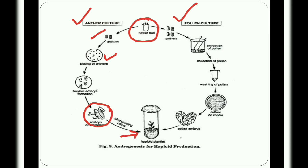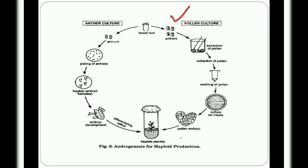In pollen culture, the excised anthers are homogenized and filtered through a nylon sieve to remove anther wall debris. The pollens are then centrifuged at 500 to 800 rpm for 5 minutes, the supernatant is discarded, and pollen pellets are suspended in fresh basal liquid medium. The mixed pollens with measured volume of liquid medium are spread on a sterile petri dish, sealed with paraffin, and incubated at 27 to 30 degrees Celsius under 500 lux. After 30 days, young embryoids appear and are recultured in solidified MS medium to obtain plantlets.